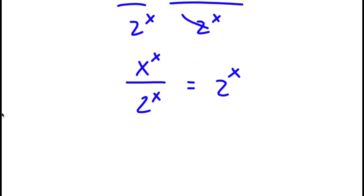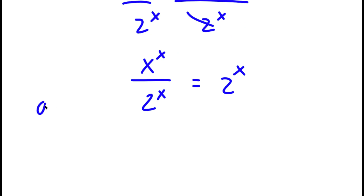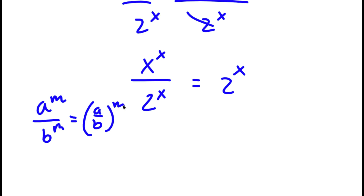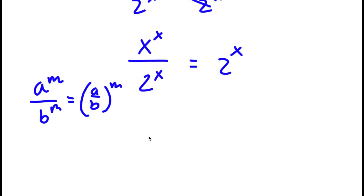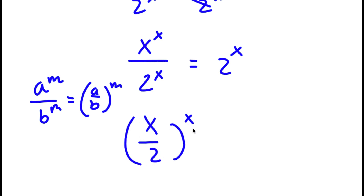If I have something in the form a to the power of m over b to the power of m, this is equal to a over b to the power of m. So this gives me x over 2 to the power of x, which is equal to 2 to the power of x.